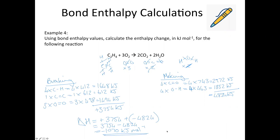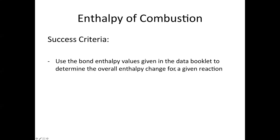And that's the last example of this video. You may have been shown to do it a different way using an equation with products minus reactants, but I prefer to teach it this way because it makes you understand what's actually happening in the reaction — you're putting a certain amount of energy in to break all the bonds, getting a certain amount of energy out to make all the bonds, and the net total gives you the overall entropy change of the reaction. Provided this video is of any use, you should now be able to use the bond entropy values in the data booklet to determine the overall entropy change for a given reaction. Anyway, thank you. Goodbye.